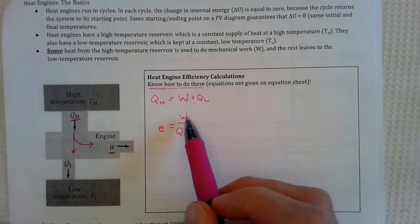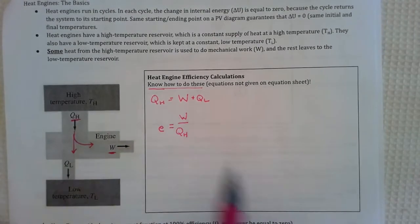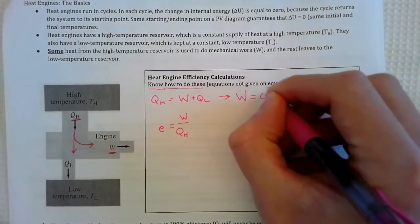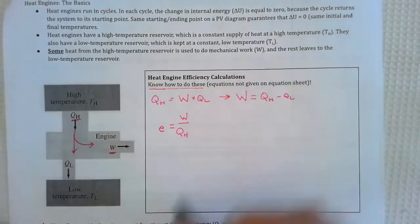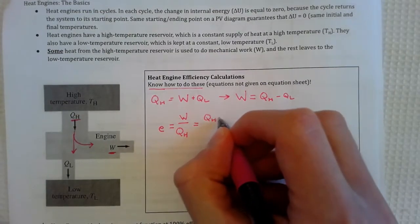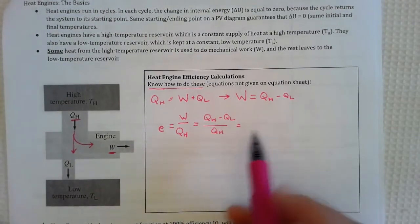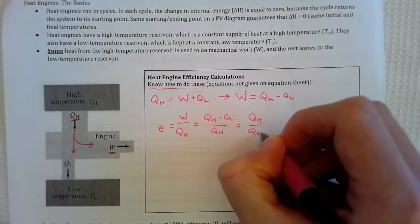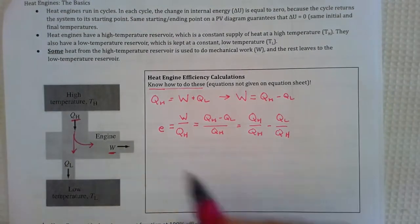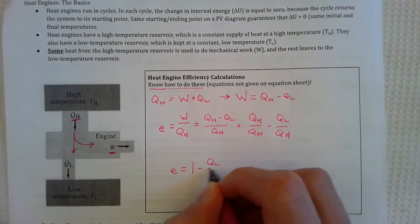Some of these things are not always easy to measure, particularly this work. So if you go back to this situation up here, solve this equation, which is true for any heat engine for work. So work is going to be equal to QH minus QL. So now, substituting that in down here, QH minus QL divided by QH. And if you have a fraction here, we can split that up. QH over QH minus QL over QH. This is just 1, which gives us efficiency is equal to 1 minus QL over QH.